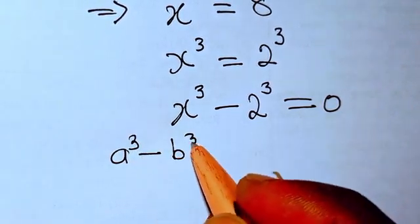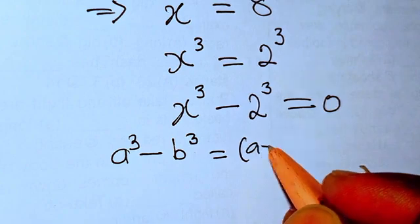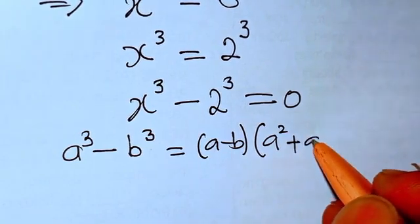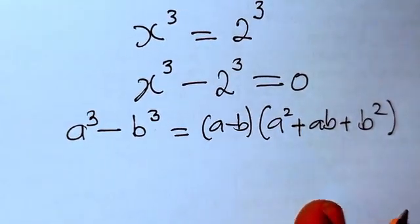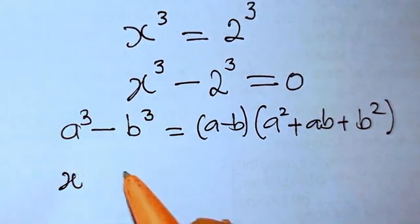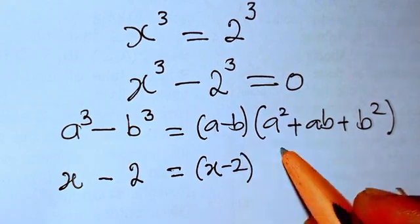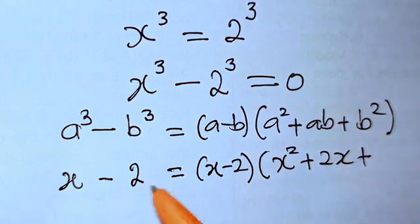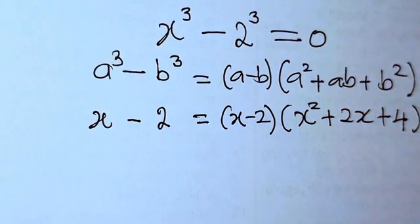This takes the form of the difference of two cubes: a³ minus b³ equals (a minus b)(a squared plus ab plus b squared). Here x is a and 2 is b, so this becomes (x minus 2)(x squared plus 2x plus 2 squared), which gives us (x minus 2)(x squared plus 2x plus 4).